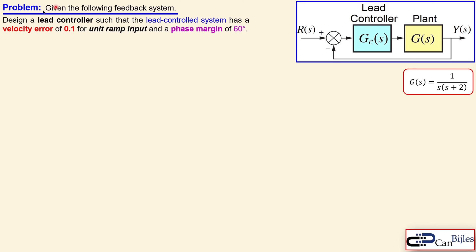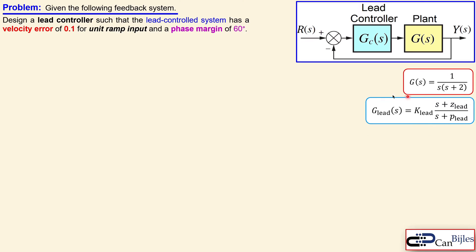Our example has the following feedback system: a lead controller in cascade with the plant. The plant transfer function is a second-order system with poles at s=0 and s=-2. We want to design the lead controller such that the system has a velocity error of 0.1 for a unit ramp input and a phase margin of at least 60 degrees. The lead controller transfer function is K_lead times (s + z_lead) over (s + p_lead), giving us three parameters to determine.